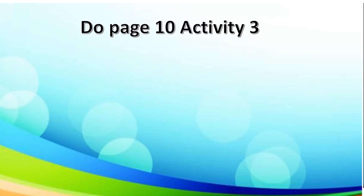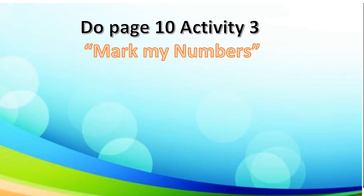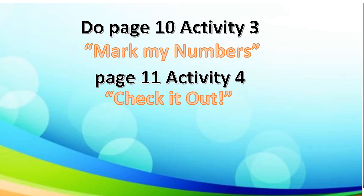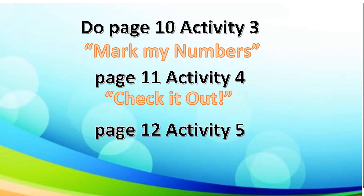Now, let's move on to your module and do the following activities. Turn to page 10, activity number 3 with the title Mark My Numbers. The direction states: in each problem, underline the population standard deviation or sample standard deviation and encircle the number of samples. For page 11, under activity number 4 with the title Check It Out, read and analyze each problem and put a check on the columns of the criteria that corresponds to the given problem. And for activity 5, page 12, Which Is Which, identify the appropriate test statistic to be used in each problem. Write z-test or t-test on a separate sheet of paper.